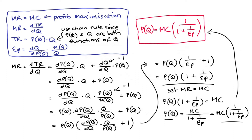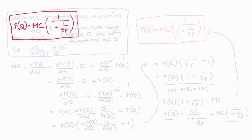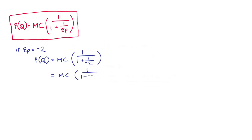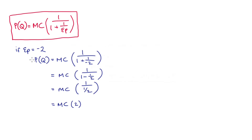So now we can go on to think about some examples. What we should find is that as our elasticity of demand gets more elastic, the markup is smaller. Let's start with the case where elasticity of demand equals negative two. Substituting into our formula, we have price equals marginal cost multiplied by one divided by one plus one over negative two. This part in parentheses reduces to one over one minus a half, which is one over a half, equal to two. So if the elasticity is negative two, we double the cost to get the optimal price.